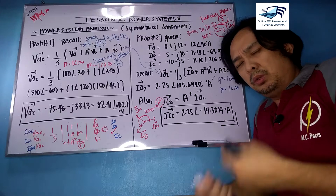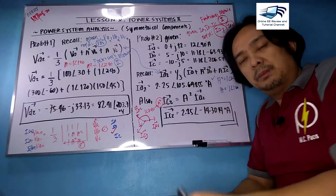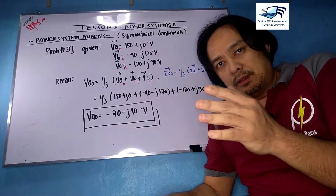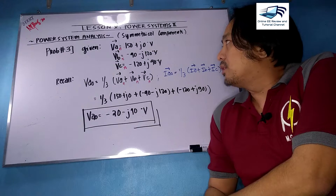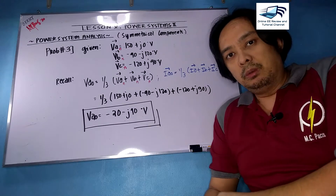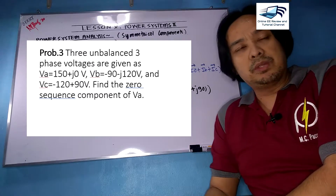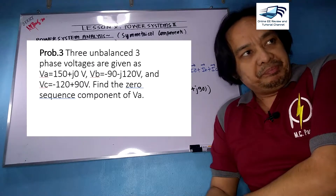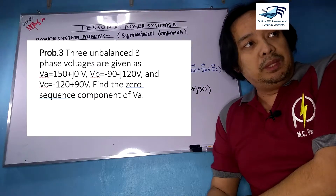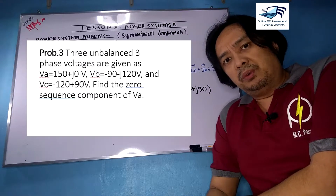If you know the concept, know how to substitute values, and know how to manipulate formulas, you can answer any problems. Let us go forward to the next problems. We continue our discussion on symmetrical components. We are on problem number 3. The three unbalanced three-phase voltages are: VA = 150 + j0, VB = −90 − j20, and VC = −120 + j90 volts. We need to find the zero sequence component of the voltage at phase A.